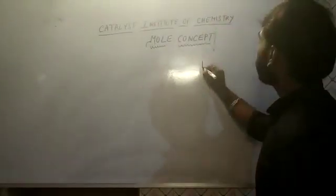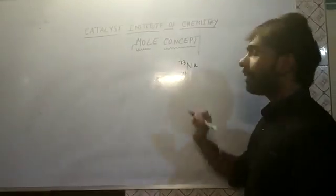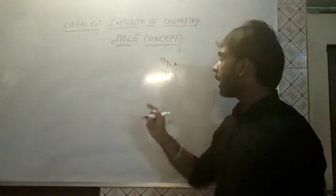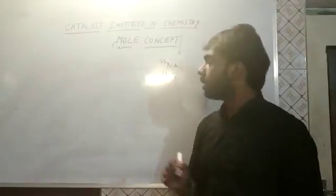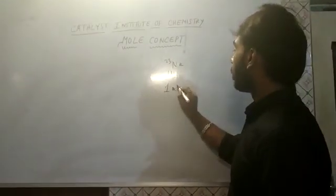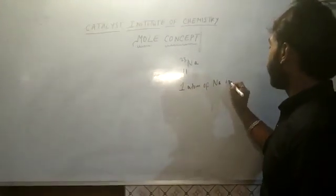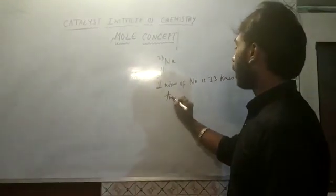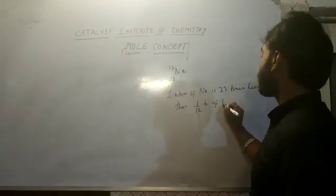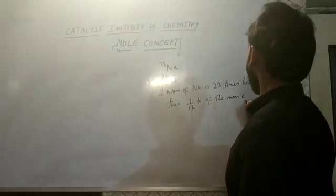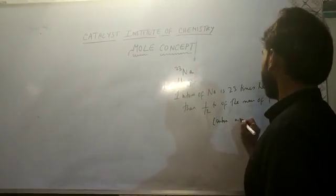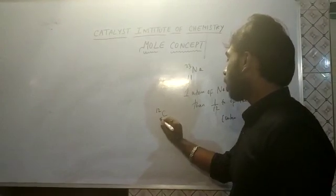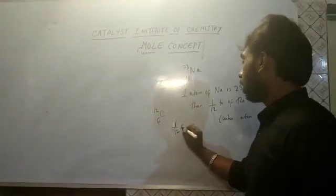When we write Na with atomic weight 23 and atomic number 11, this means that 1 atom of sodium is 23 times heavier than 1/12 of the mass of 1 carbon atom. Carbon has atomic weight 12 and atomic number 6, so 1/12 of 12 is 1.